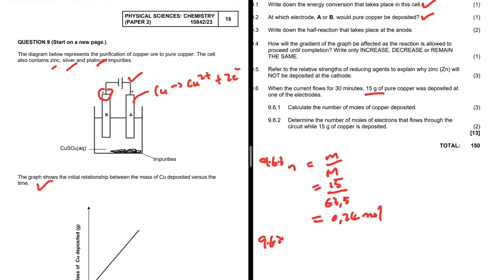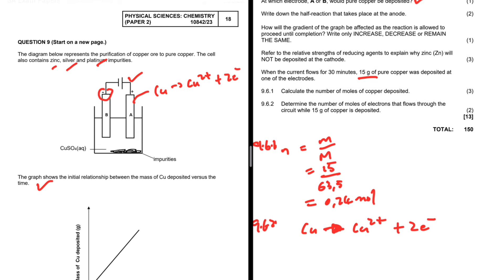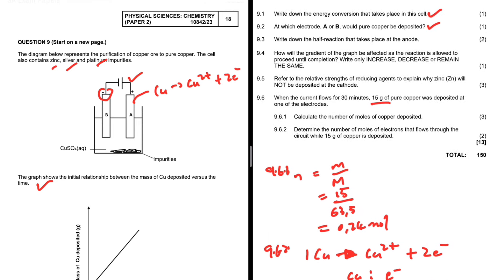9.6.2: determine the number of moles of electrons that flow through the circuit while 15 grams of copper is deposited. From the half-reaction, one mole of copper requires two moles of electrons. So if we have 0.24 moles of copper, the number of moles of electrons is 0.48 moles.